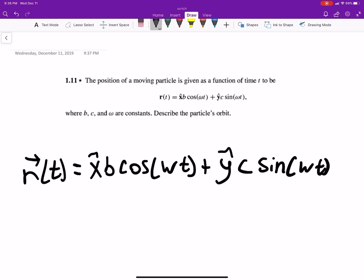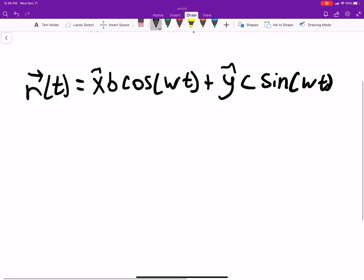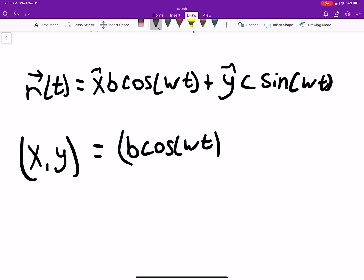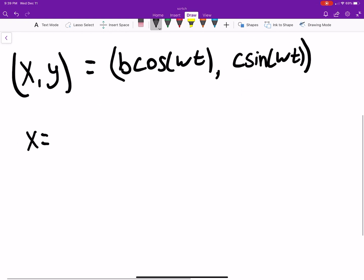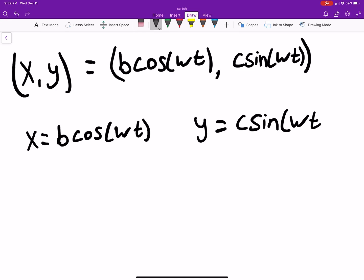So if we think of a single position, say x comma y, that's going to be b cosine of omega t. This will describe the x component and c sine omega t, and this describes the y component. So x equals b cosine of omega t, and y equals c sine of omega t.